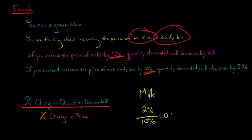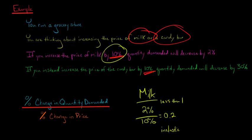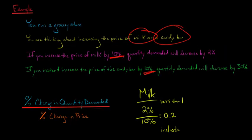This gives us 0.2 for the price elasticity of demand for milk. Because this is less than one, we say that demand for milk is inelastic. That means customers are not that price sensitive with milk. If you increase the price by 10 percent, people don't say they're not drinking milk anymore and let quantity demanded fall by 50 or 60 percent. Quantity demanded only goes down by 2 percent even with a 10 percent price increase.